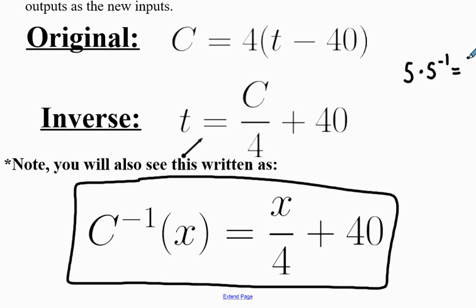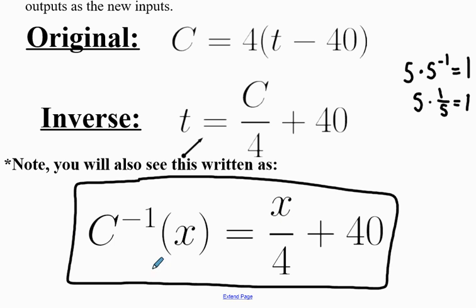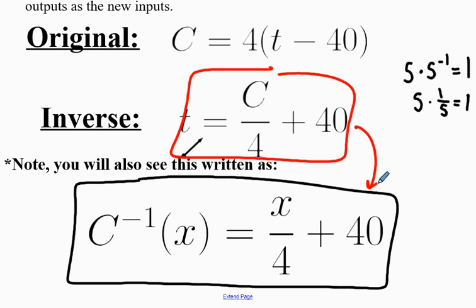When we study exponents, we'll review why a negative 1 exponent means inverse. For example, 5 times 5 to the negative 1 gives you 1, because 5 to the negative 1 is one-fifth — it gets you back to the beginning of multiplication, which is 1. In function notation, we use the variable x to mean input. All that happens is a renaming — we rename using x because x stands for inputs in mathematics.